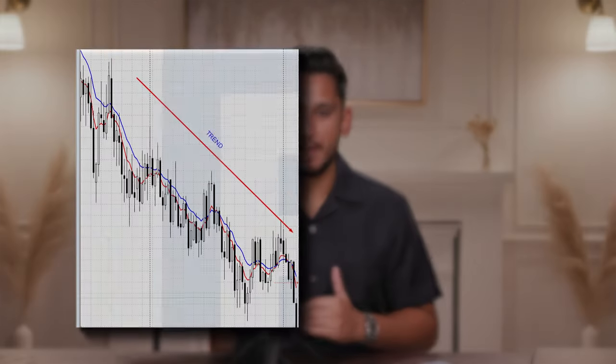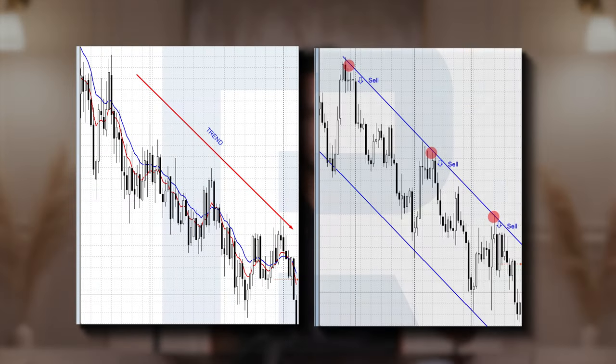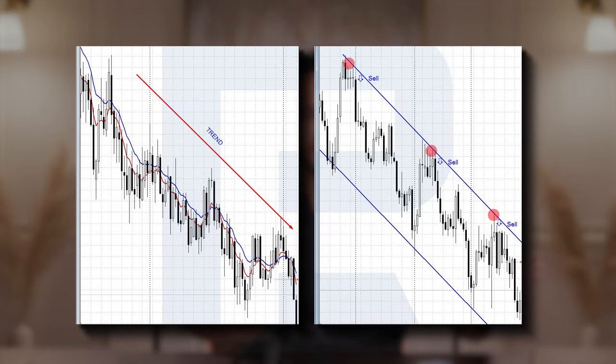Whatever happens on the higher timeframe monthly happens on the M1 timeframe. So you take your market structure read and jump to a lower timeframe, using smart money concepts — structure shifts, change of character, break of structure, all of these things. That gives you a better idea of where a rejection is. If you're trading off an order block or an IFC, even better. So you'll have better win rates, better precision, and better risk reward.